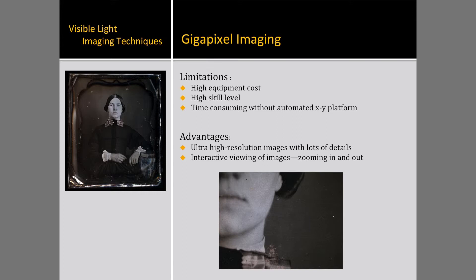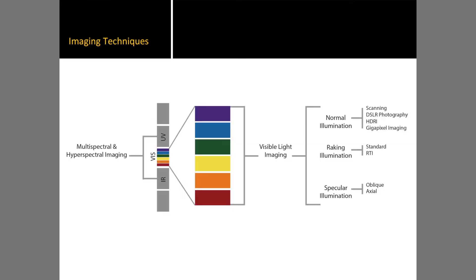But the equipment cost can be quite high, and without an automated XY platform, the manual image acquisition can be time-consuming. Having covered the visible light imaging techniques, including normal raking and specular illumination, we will quickly touch on a bit of multispectral and hyperspectral imaging that we have done.